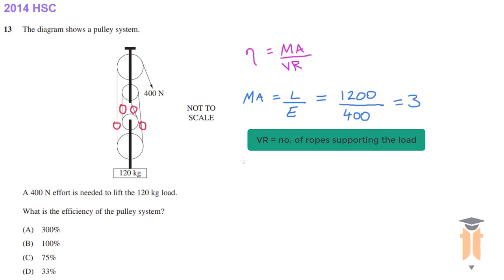So in total we have a velocity ratio of 4. Now that we've got our mechanical advantage and our velocity ratio, we can simply substitute that into our efficiency equation to calculate the answer.